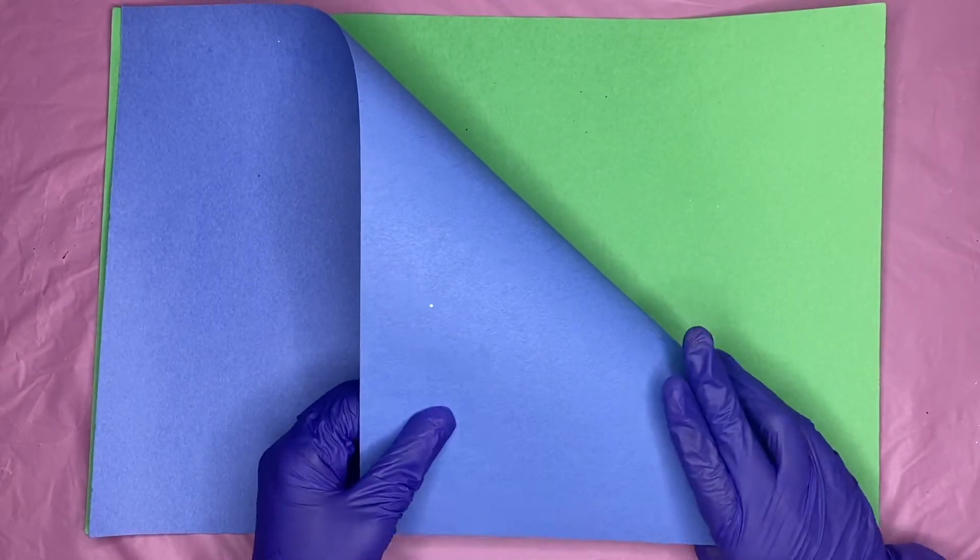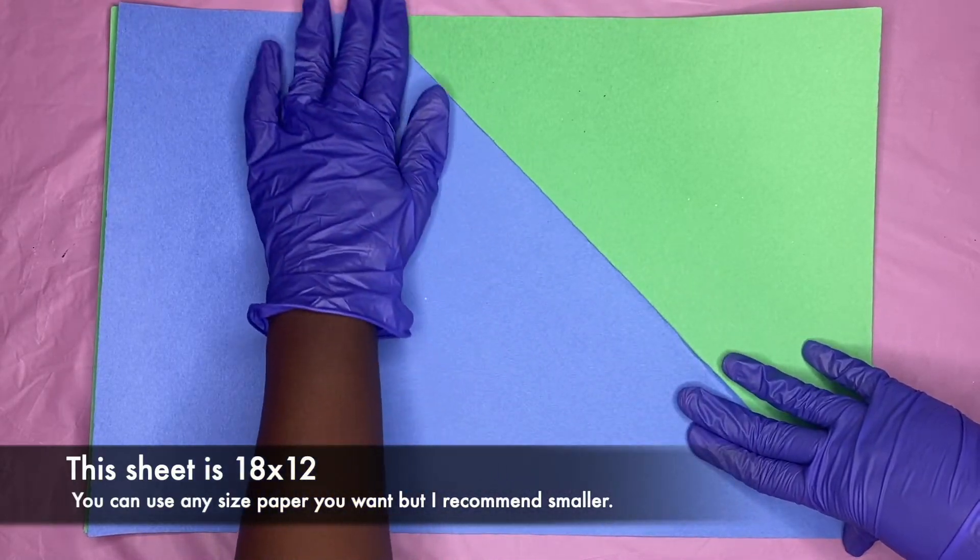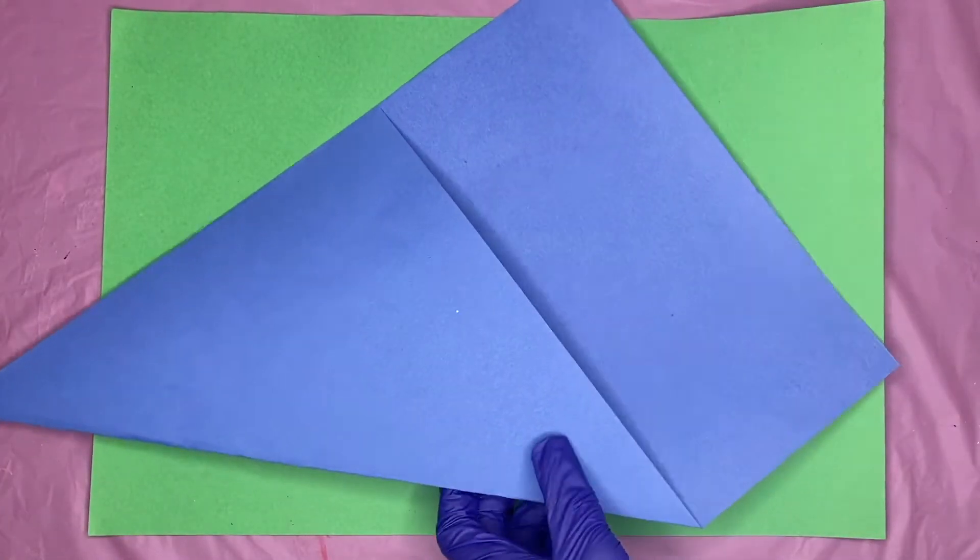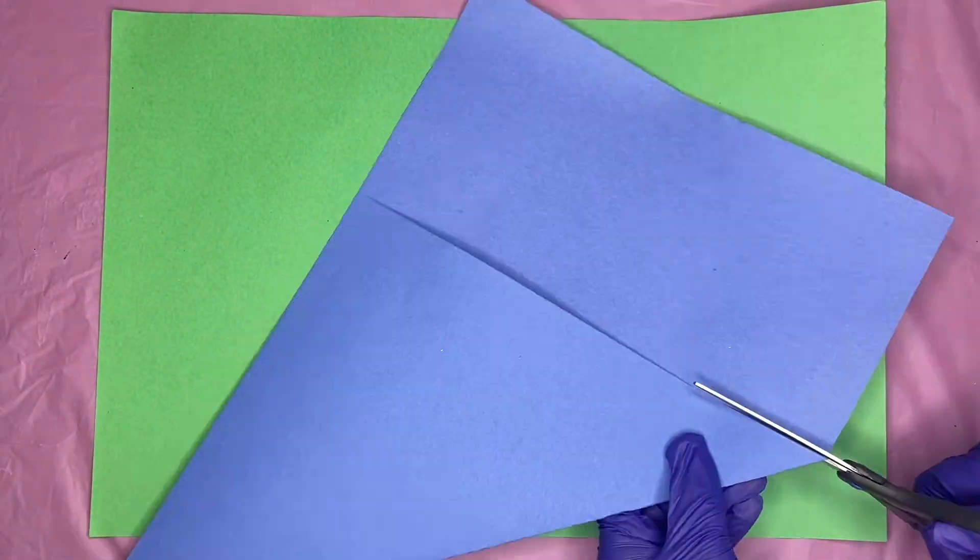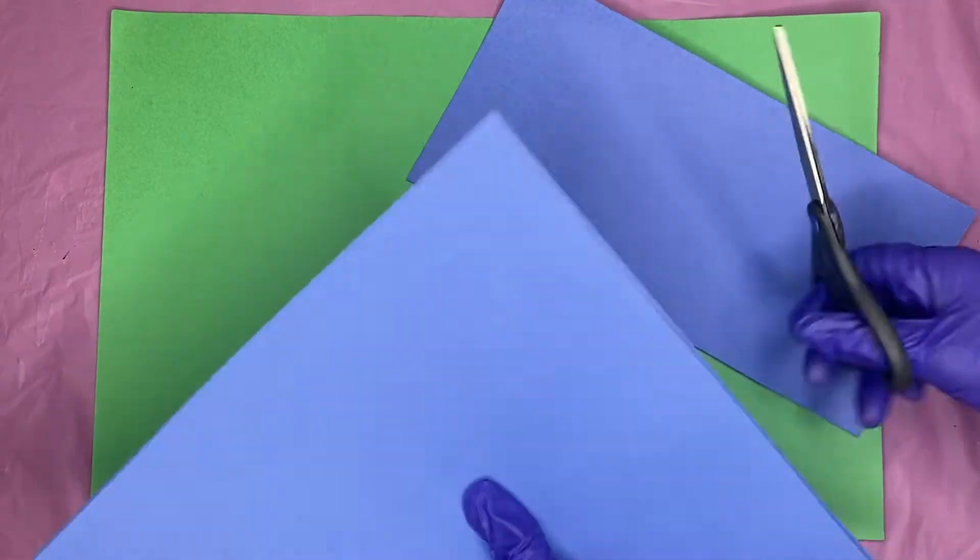Alright, so start out with a sheet of construction paper. Mine is 18 inches by 12 inches, but you don't need it that big honestly. This is way too big and I'll show y'all at the end what this ends up looking like, but it's way too big for a pinwheel. Go ahead and cut the excess off because we ultimately want a square to work with.